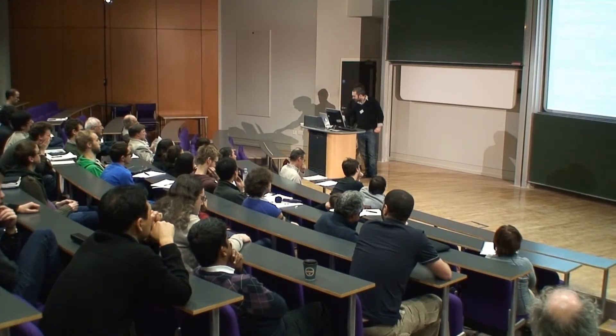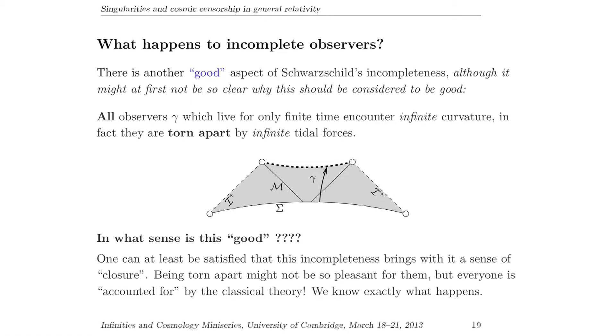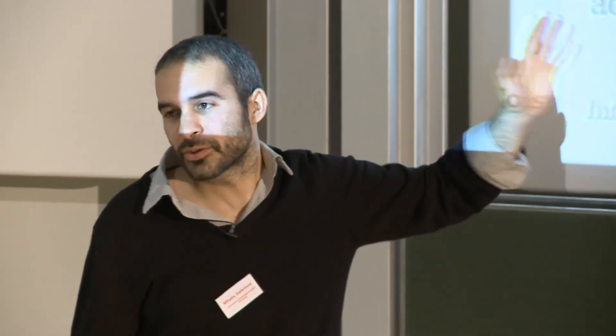What I said regarding Schwarzschild — that the fact that observers are torn apart tells you why incompleteness happened — was actually slightly dishonest. It does not tell you why incompleteness happened; it is very fortunate that this happened before you had Cauchy horizons. It's actually a fortuitous accident. In fact, as we'll see next time, this Schwarzschild behavior does not happen in general — this is not what one expects. I'll talk about this tomorrow.